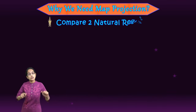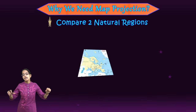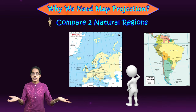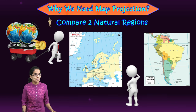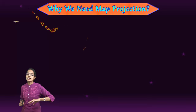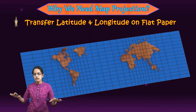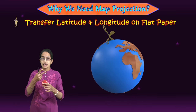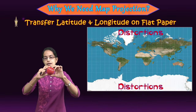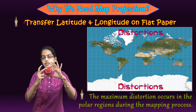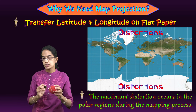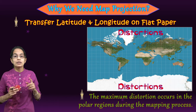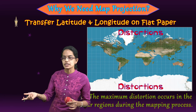The second advantage: if I want to compare two natural regions, I can take maps of Europe and South America simultaneously and easily compare them — but carrying two or four globes is a difficult task. Also, we are transferring latitudes and longitudes onto the sheet of paper. When a three-dimensional spherical surface is cut and opened, there would be distortions, maximum towards the polar areas. Where these distortions are maximum depends on either the light source or the developable surface.